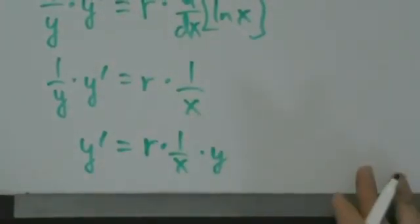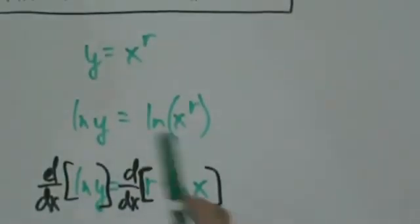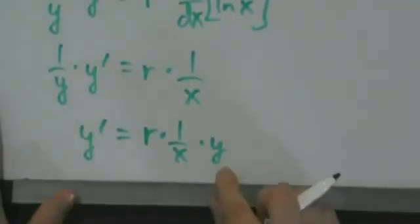But again, we're not done yet. We want the answer just in terms of x. So we go back to the beginning, and we say, oh okay, y is x to the r.